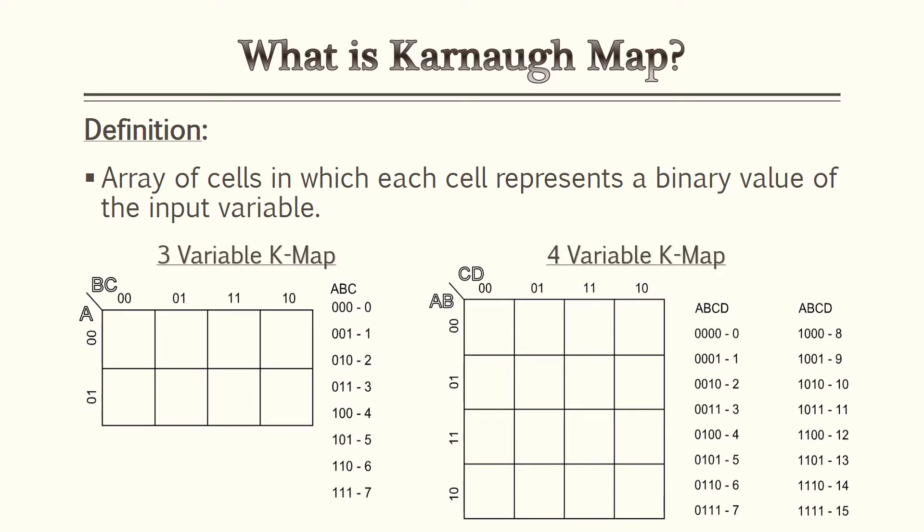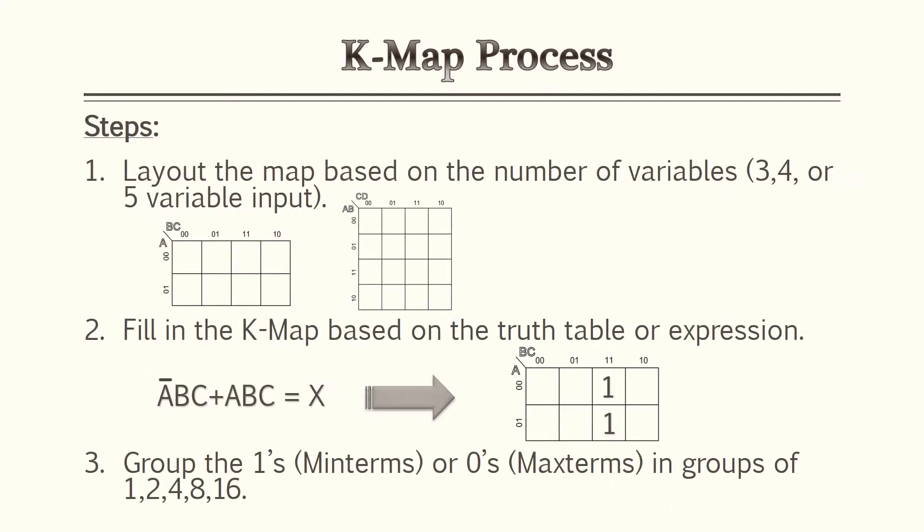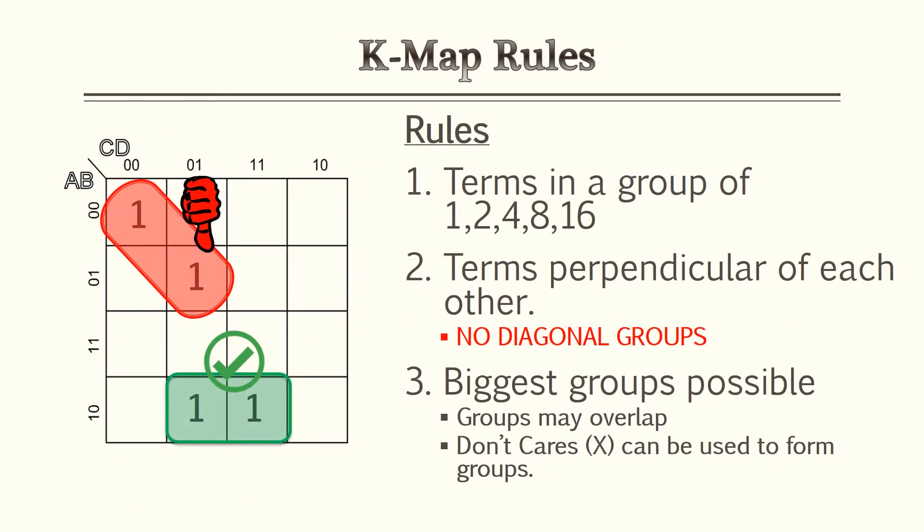To understand K-maps there's a very simple process with three steps. Step one: lay out the map based on the number of variables — three variables means a three variable K-map, four variables means a four variable K-map. Step two: fill in the K-map based on the truth table or expression. Step three: group all the ones or zeros in groups of 1, 2, 4, 8, and 16, which we'll go over in more detail in later slides.